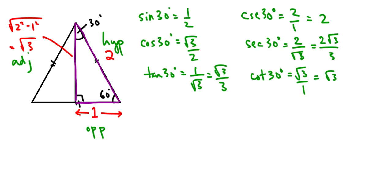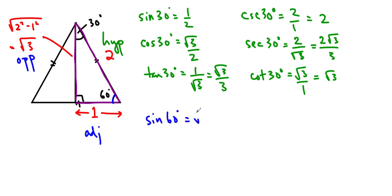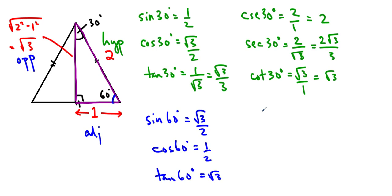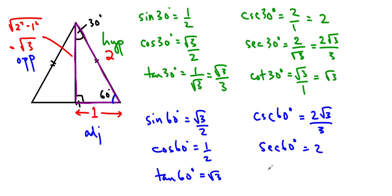Now we're going to go from the other perspective. The hypotenuse stays as it is no matter what angle we're looking from. From the 60 degree angle, root 3 is the opposite and 1 is the adjacent. So sine of 60 degrees is root 3 over 2. Cos of 60 degrees is 1 half. Tan of 60 degrees is root 3. Cosec of 60 degrees is 2 root 3 over 3. Sec of 60 degrees is 2. And cotan of 60 degrees is root 3 over 3.